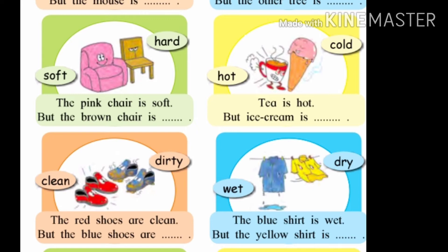Now come to the next picture. The tea and ice cream is given. Hot is the word written near the tea and cold is the word written near the ice cream. Because we all know, tea is hot and ice cream is cold. Tea is hot but ice cream is cold. Hot manje garam, and cold manje thanda. Hot and cold, these are the opposite words. Garam cha viruddha thanda.